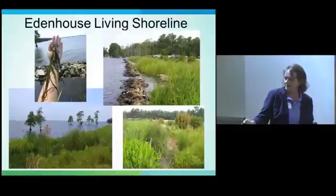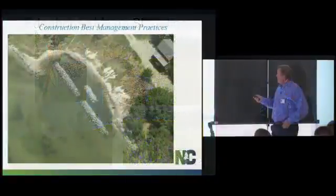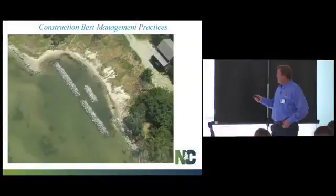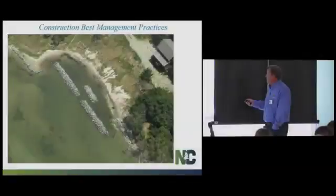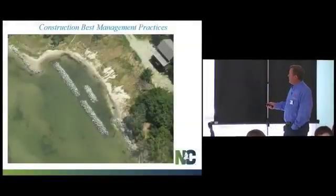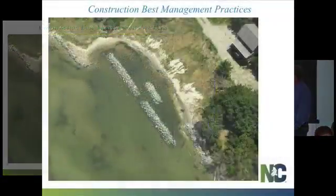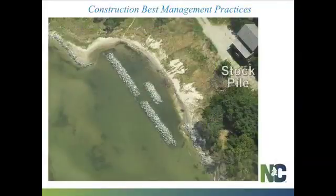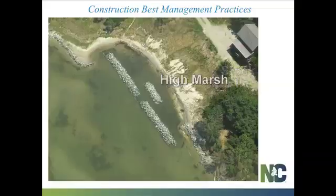Rock sills are common in many living shoreline designs, and construction best practices are important to protect adjacent wetlands. Steve Trowell shares an example from Uckercote: a major permit riprap sill built from granite on a high marsh vegetated with black needle rush, three-square, and salt meadow hay. The stockpile site was on high ground, and the site was accessed at two points. The rock was moved from stockpile by a rubber tire backhoe, with logging mats laid to a rock box.